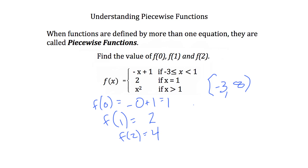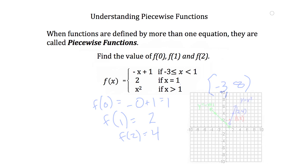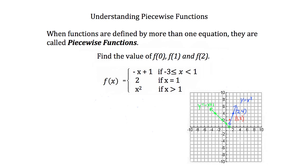First, we graph the line y equals negative x plus 1, keeping only the part for which negative 3 is less than or equal to x is less than 1. Then we plot the point (1, 2), because when x equals 1, f of x equals 2. And finally, we graph the parabola y equals x squared and keep only the part for which x is greater than 1. The graph we end up with looks something like this — we have the three pieces plotted.